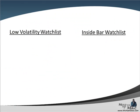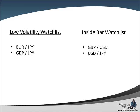Moving to our watch lists, we start with the low volatility watch list, which uses the one-hour timeframe with Bollinger Bands. We have the euro yen and the pound yen on that list. For our inside bar watch list, we're watching today's range compared with Monday, and we will be watching the pound dollar, the dollar yen, the pound yen, and the euro yen.